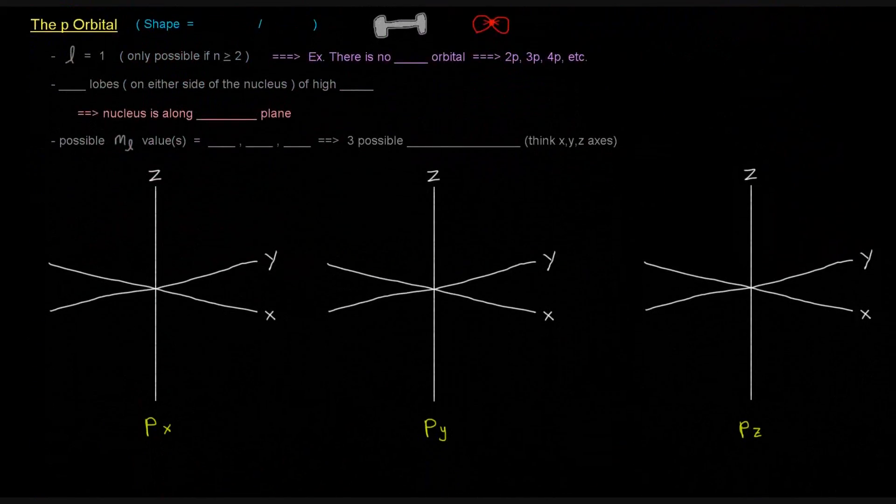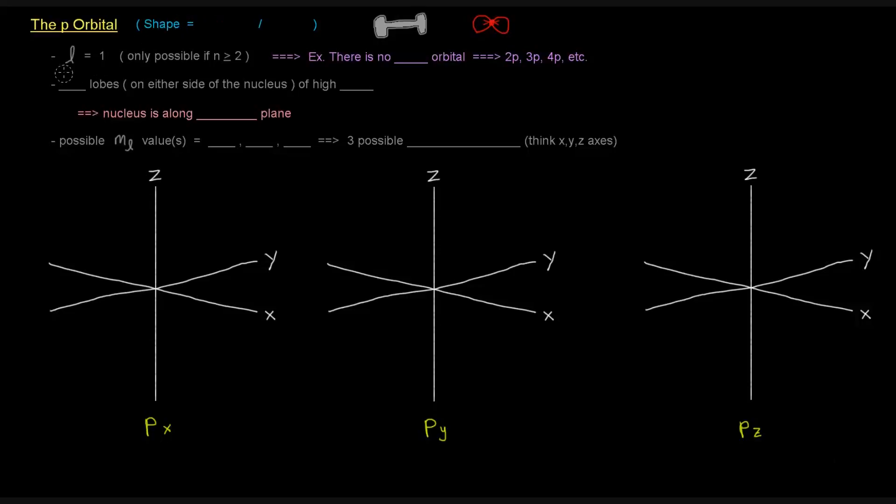Next up is the p orbital. And that's where the L value equals 1. And the shape of a p orbital is like a dumbbell or a bow tie. So I've kind of drawn both here. Dumbbell, like people use those to lift weights. And a bow tie is kind of drawn like this. So a p orbital kind of looks like this.